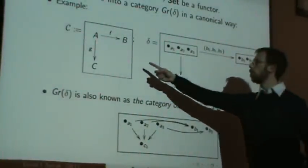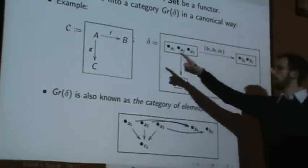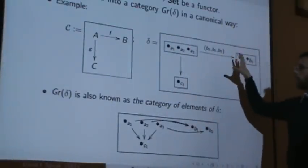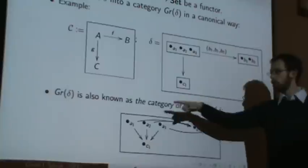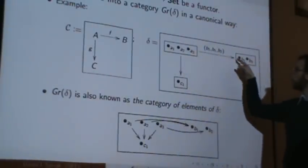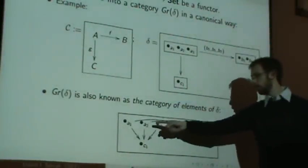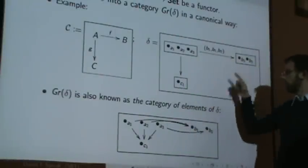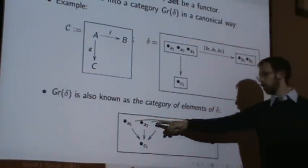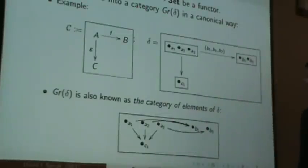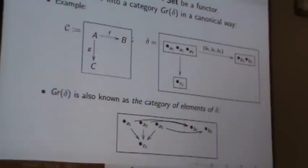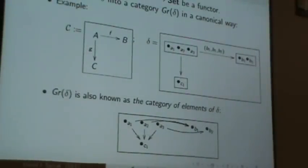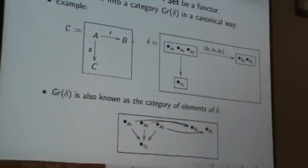So suppose you have a category C and a functor to set. Then the Grothendieck construction takes anything of that form and gives you a new category out. And what does it do? Well, if you have this category and this is a picture of a functor in sets, namely three sets and two arrows between them. How do you convert this into a new category? Well, you kind of do it in the obvious way. Every element you see there, you make an object. And every arrow, you turn it into lots of arrows. So I guess since A1 was going to B1, I put in a map, A1 to B1, an arrow, A2 to B1 and A3 to B2, et cetera. So it's also known as the category of elements of delta. It throws all of the elements into one big category and sends them wherever they obviously, quote unquote, should go.